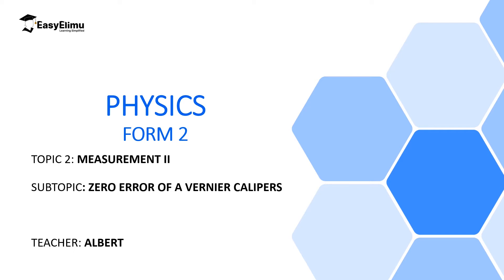Welcome to ECLIMU Learning Simplified and welcome to this lesson. In the previous lesson we discussed how to make readings on a Vernier Calipers scale and also the parts of Vernier Calipers. We realized that Vernier Calipers has a movable jaw and sometimes due to mechanical failure that instrument can be making readings even when there is no object being measured. So that's what we're going to discuss in this lesson — what we call the zero error of Vernier Calipers — and we're going to discuss two errors: a positive error and a negative error.